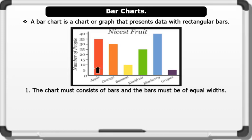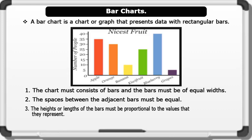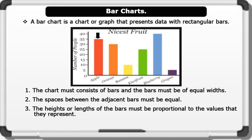One, the chart must consist of bars and the bars must be equal width. Two, the spaces between the adjacent bars must be equal. Three, the heights or lengths of the bars must be proportional to the values that they represent. The bars can be plotted vertically or horizontally. A bar chart is sometimes called a bar graph or a column chart.